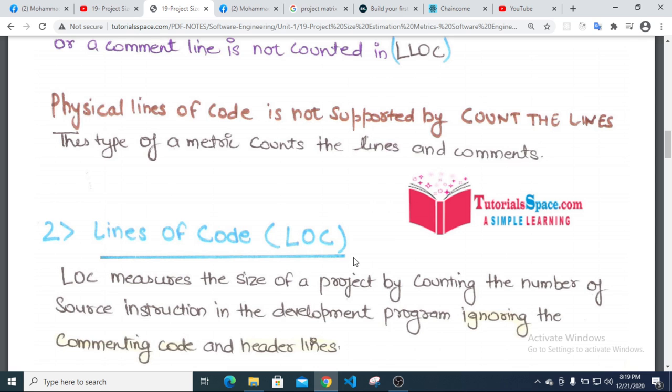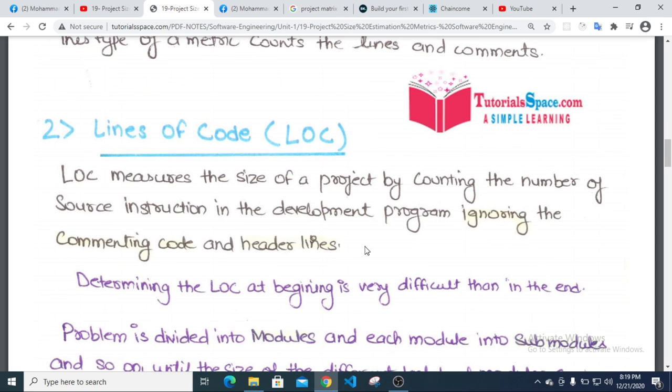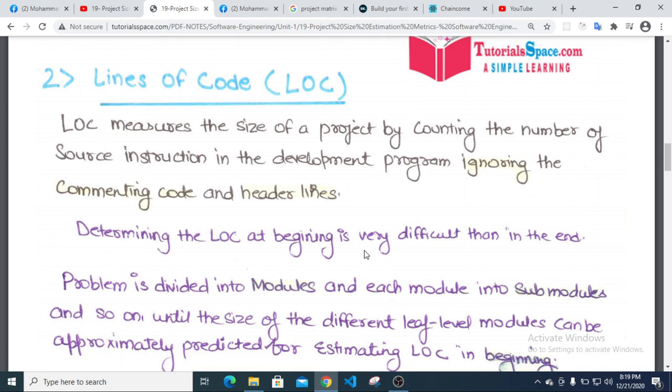LOC measures the size of a project by counting the number of source instructions in the development program, ignoring the commenting code and header lines. Determining the LOC at the beginning is very difficult. The problem is divided into modules and each module into submodules.